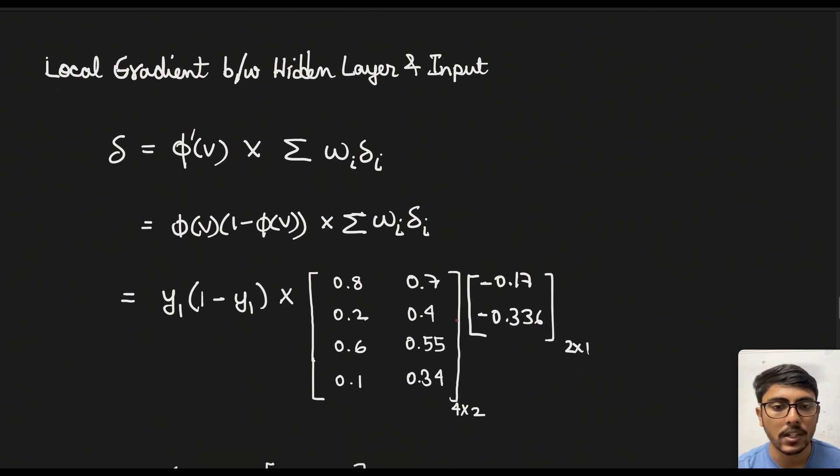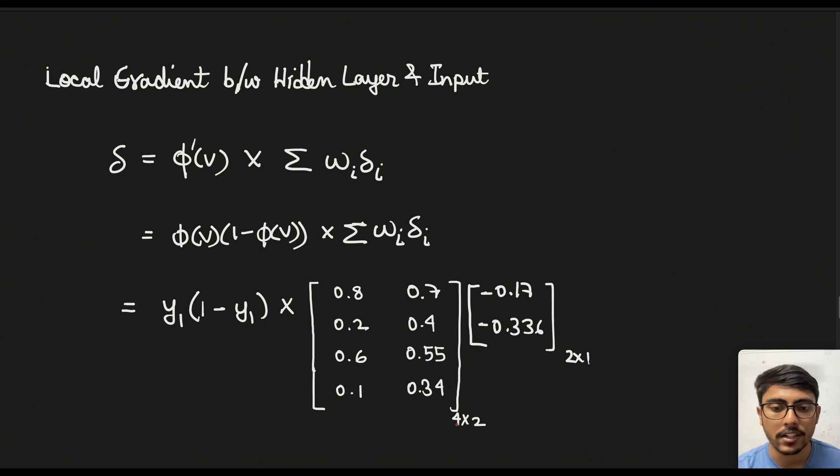So if we do that wi has the matrix of 4 × 2 and δi as we just calculated is 2 × 1. And this 4 × 1 is from the weight matrix of the second layer. Why? Because we are already catering to the first that is the previous layer towards this hidden layer with φ'(v) and the later part is handled by this term.